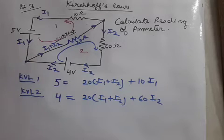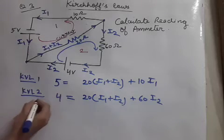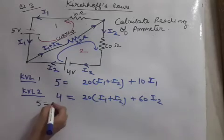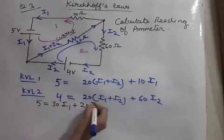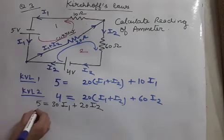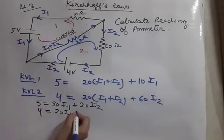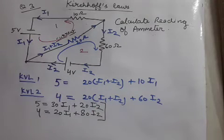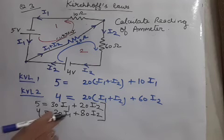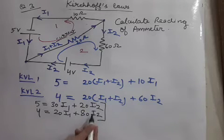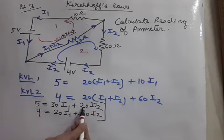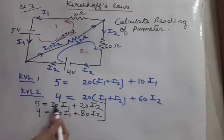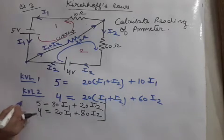Now we have to simplify these two equations so that we can get I₁ and I₂. Our KVL first equation will become 5 equal to 20 plus 10, 30I₁ plus 20I₂. And next equation will be 4 equal to 20I₁ plus 20 plus 60, 80I₂. Now our target is to solve these two equations so that I₁ and I₂ are obtained. These are linear equations. How to solve the linear equations? By removing any one variable. Like here, 80I₂ is appearing, we have to make this also 80 so that they are cancelled. For that, we have to multiply this equation with 4.